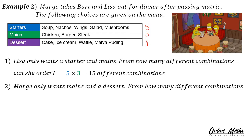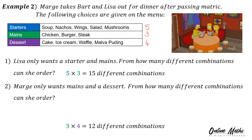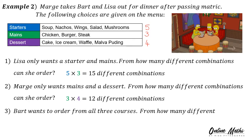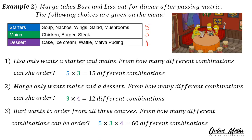Question 2: Marge only wants mains and a dessert. From how many different combinations can she order? Looking at the menu, mains has 3 choices times dessert has 4. Therefore, 3 times 4 is 12 different combinations. Question 3: Bart wants to order from all 3 courses. From how many different combinations can he order? 5 times 3 times 4 is equal to 60 different combinations.